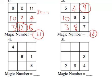So those are two magic squares complete. You can now try these problems 4 and 5.